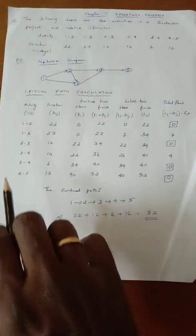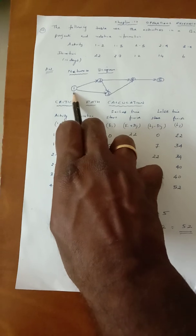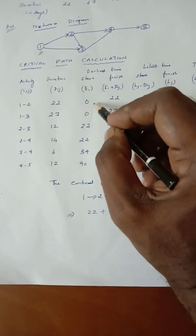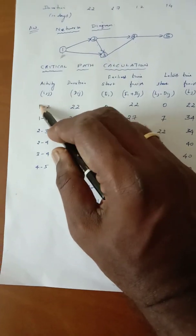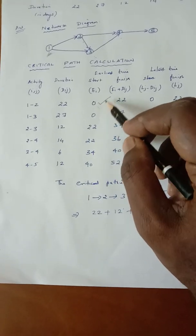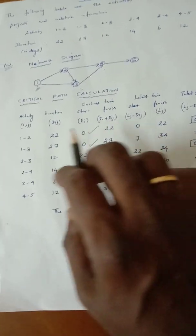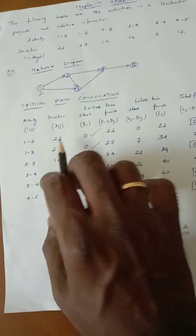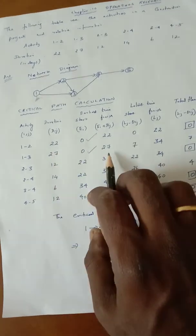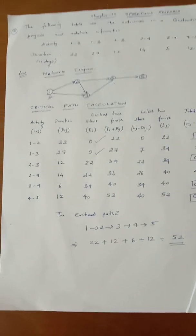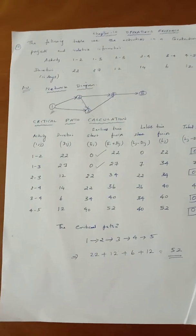For the forward pass calculation, the project starting node has start time 0. We compute earliest finish as Ei plus Dij. For activity 1→2: 0 + 22 = 22. For activity 1→3: 0 + 27 = 27. These are the forward pass left-side activities.